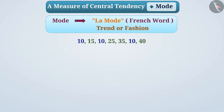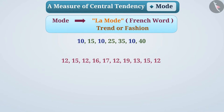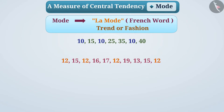For example, if we look at these observations, 12 is the most frequent value. We can say that 12 is most prevalent among this group of observations. That is, 12 is the mode of these observations.